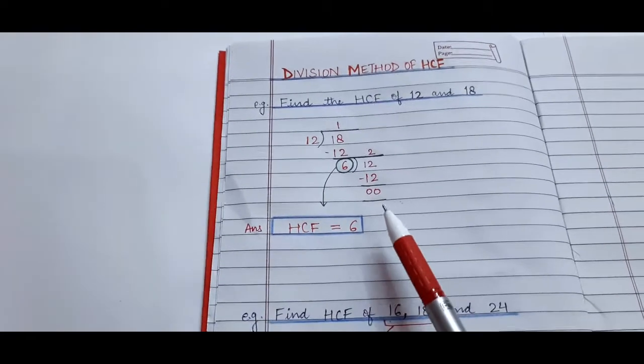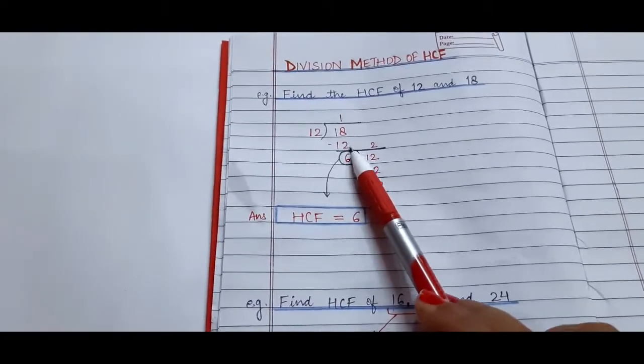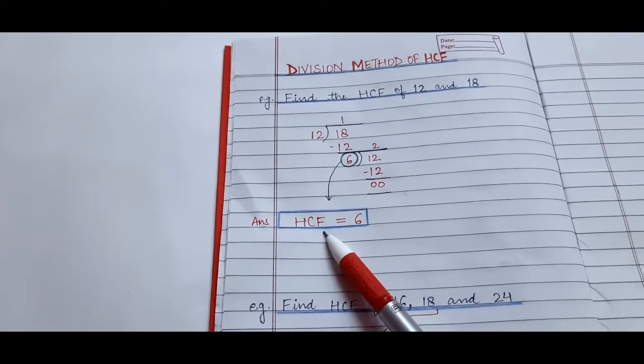Since the remainder is 0, the last divisor is our answer. That is, HCF equals 6.